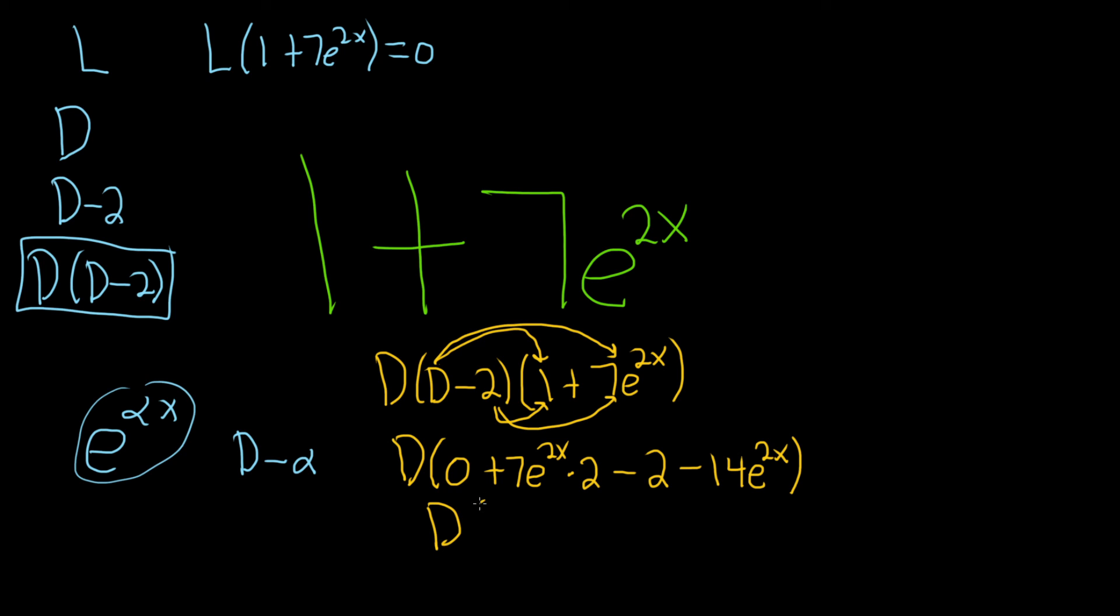All right, so we have big D. Look at this. This is 14e to the 2x, 14e to the 2x. So we're just left with negative 2. And fortunately, we have this big D, because this big D will make that 0. So we've shown that this operator annihilates this function.